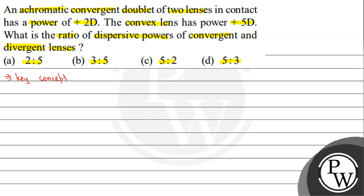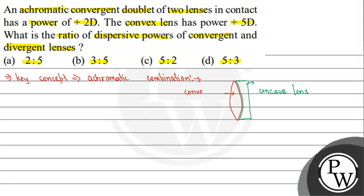The key concept used here: first we need to know what an achromatic combination is. In an achromatic combination, there is a convex lens combined with a divergent lens, which is a concave lens. So one side is the concave lens and the other side is the convex lens. This combination is called an achromatic combination.